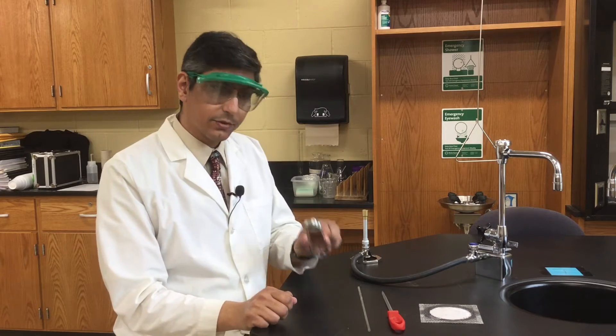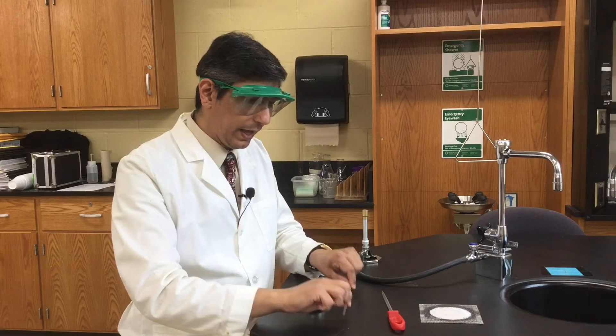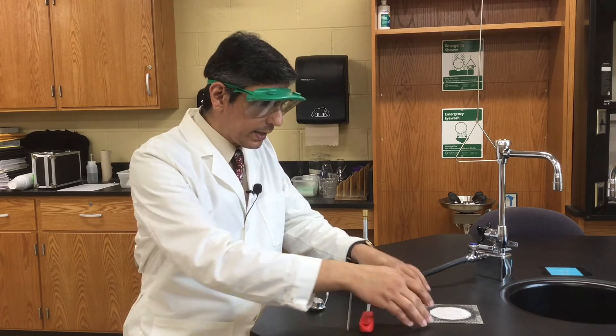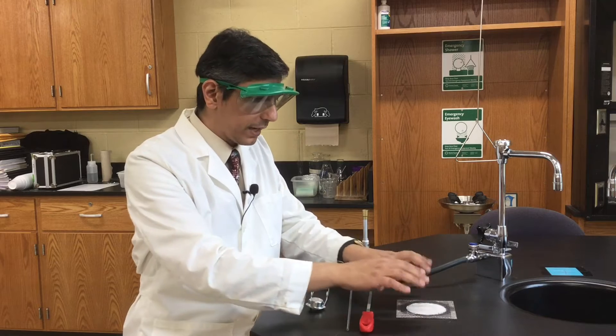Now in order to do this you're going to need a Bunsen burner as well as a striker, a piece of glass, a steel file, and a wire gauze to protect the lab surface.